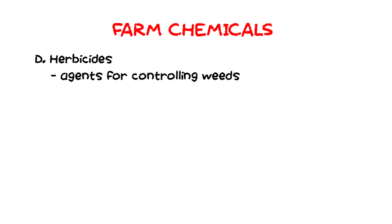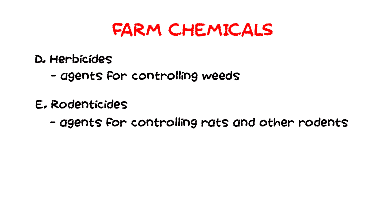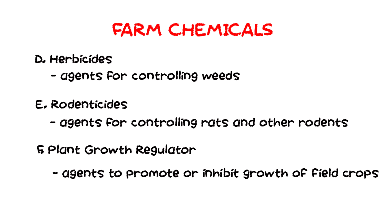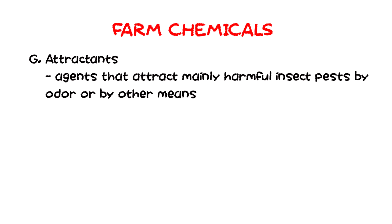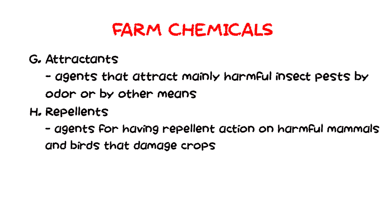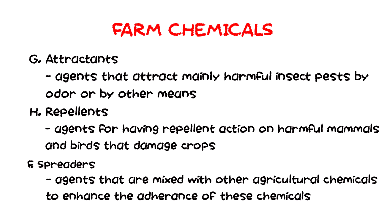We also have herbicides — agents for controlling weeds. Rodenticides are agents for controlling rats and other rodents. Plant growth regulators are agents to promote or inhibit growth of field crops. Attractants are agents that attract mainly harmful insects and pests by odor or by other means. Repellents are agents that have repellent action on harmful mammals and birds that damage crops. And lastly, spreaders are agents that are mixed with other agricultural chemicals to enhance their adherence.